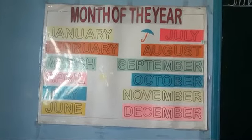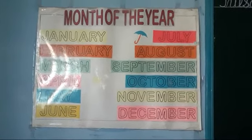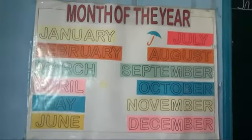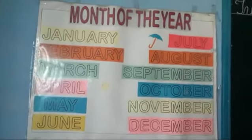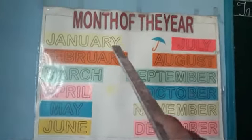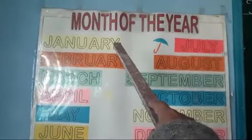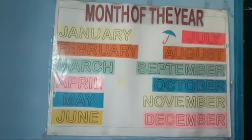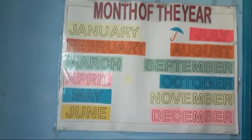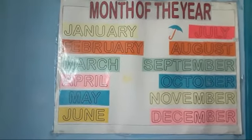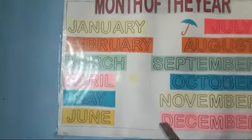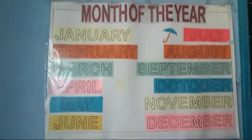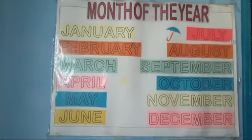Which one is the first month of the year, children? Yes — January. January is the first month of the year. And the last month of the year is December.